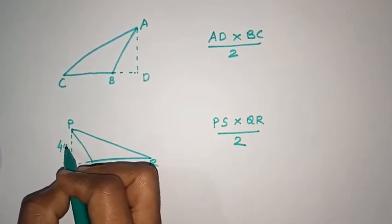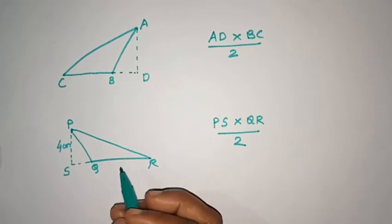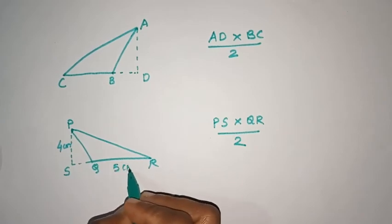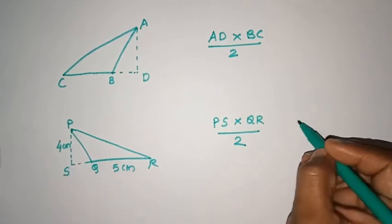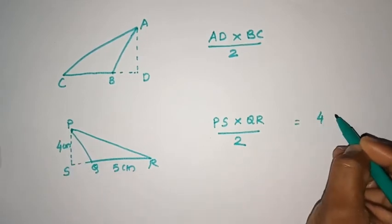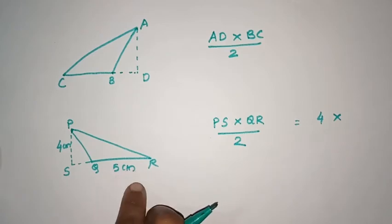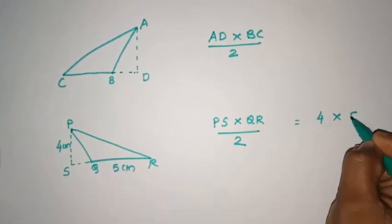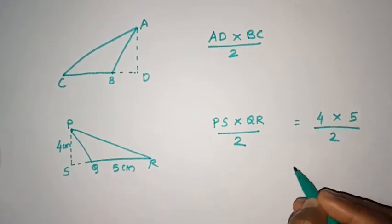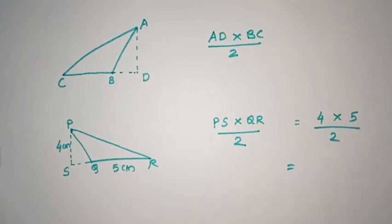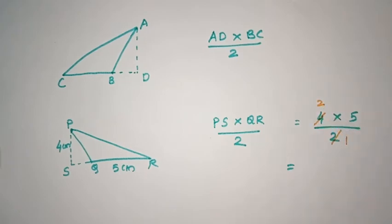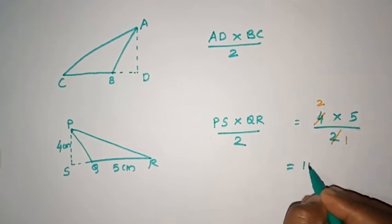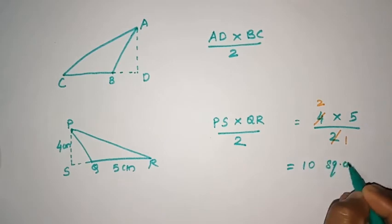If it's a try, carry 4 cm. We also take a look at Q and R. Now we are going to put a look at Q — 4 is equal to 5. Now we will cancel and multiply: 2 into 1, 2 into 2. 5 into 2 is equal to 10 square centimeters.